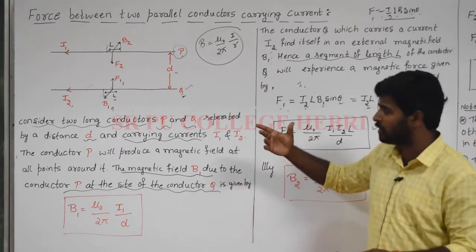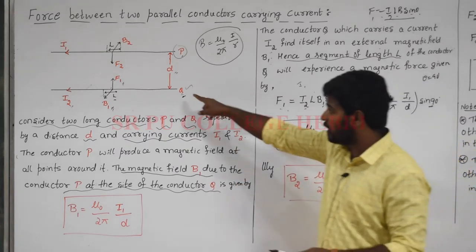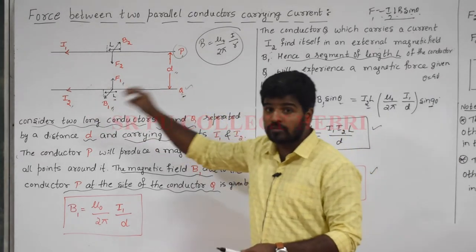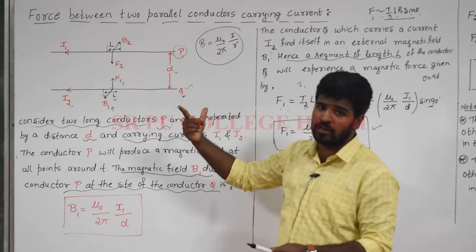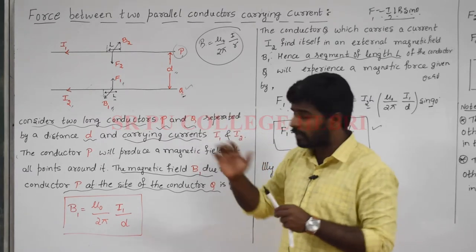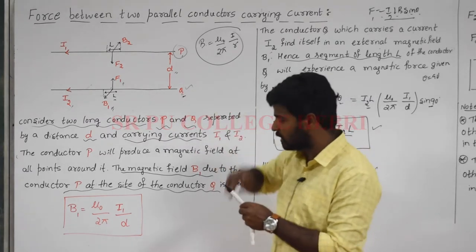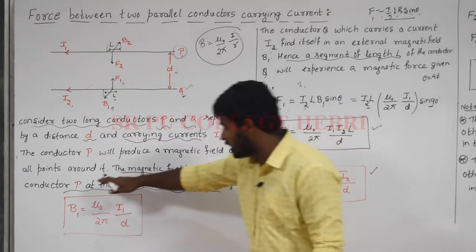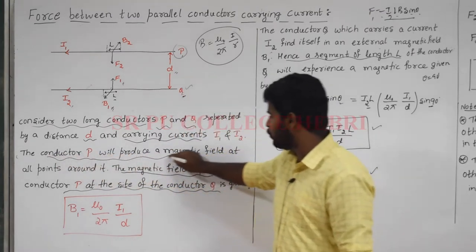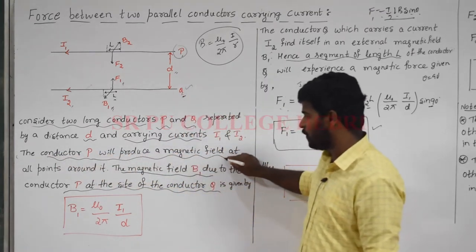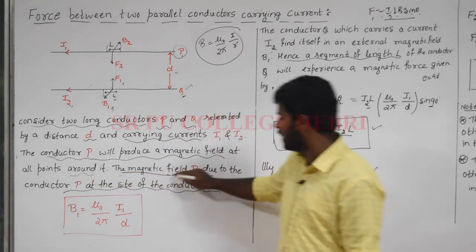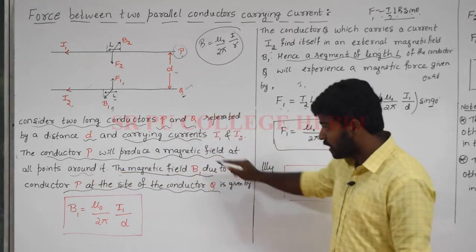The conductor Q carries current I2, and thus it produces a magnetic field all around it. Therefore the magnetic field B2 due to conductor Q at the side of conductor P is given by B2 = μ₀ / (2π) × I2 / D.